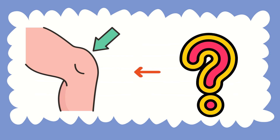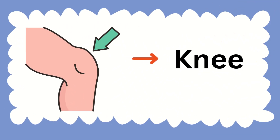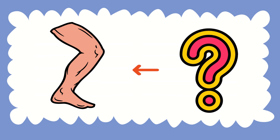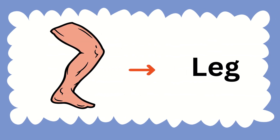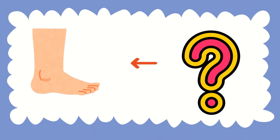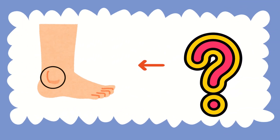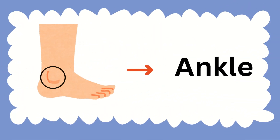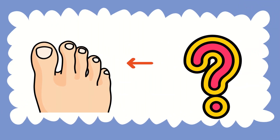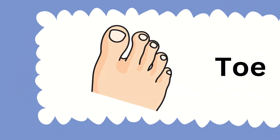What do you think about the next body part? This is called knee. Let's see the next one — this whole body part is called leg. And what is this? This is the foot. What about this part of our leg? This is called an ankle. What about these? These are called toes.